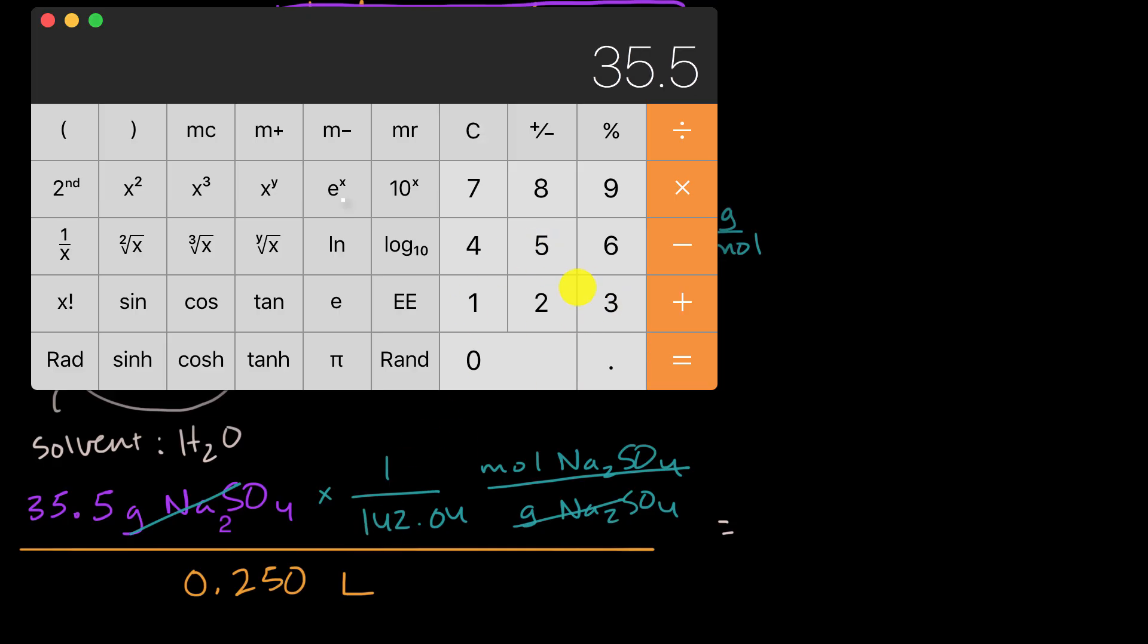35.5 divided by 142.04 equals that. And then we divide that by 0.25. I could just throw a zero in there. And then that gets us that right over there. And then we can think about how many significant figures we have.